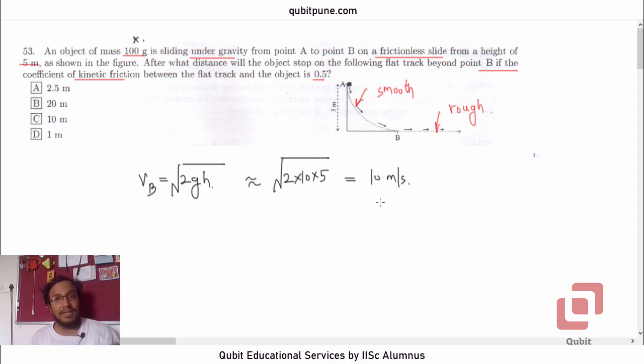Now they are saying what distance will the object travel before it stops. So what is the deceleration here? The deceleration of the object will be mu k times G. Right? Because if you draw the free body diagram of the body traveling on that flat surface,